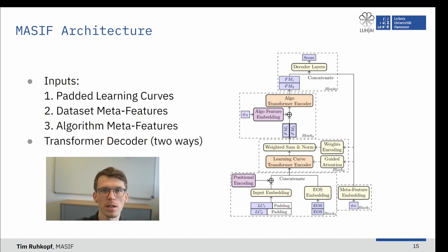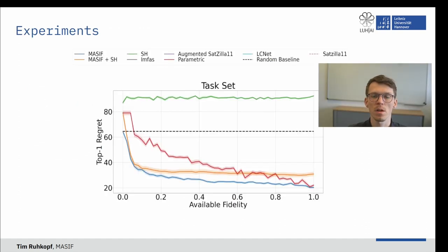But how does this look like in practice? Let us set some ground rules for evaluation. I introduce to you the slice evaluation protocol. We start with the classical setting of 0% available fidelity to our selector, relying purely on classical dataset metafeatures. Then, we iteratively keep on expanding the fidelity horizon, meaning we allow the selector to see all of the partial learning curves of all algorithms up to the fixed amount of fidelity, for example 20%.